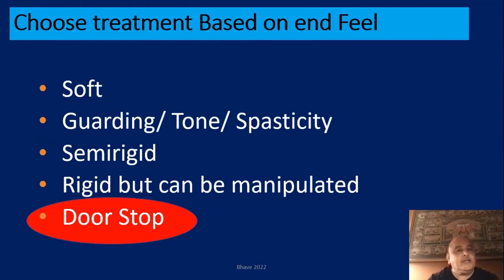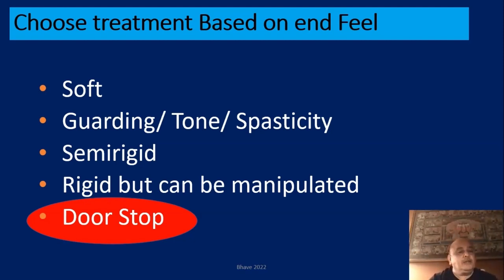When you see a patient with range of motion deficit, first assess the end feel. Is it soft? Is it guarding? Guarding can come from pain or from increased tone or spasticity. In orthopedics, we mainly see patients guarding with pain. Then we have semi-rigid end feel, and rigid but manipulable joints are usually established arthrofibrotic joints. The role of physical therapy is very apt in the top four conditions: soft contracture, guarding with restricted motion, semi-rigid, and sometimes even rigid contractures can be treated by physiotherapy and other techniques.